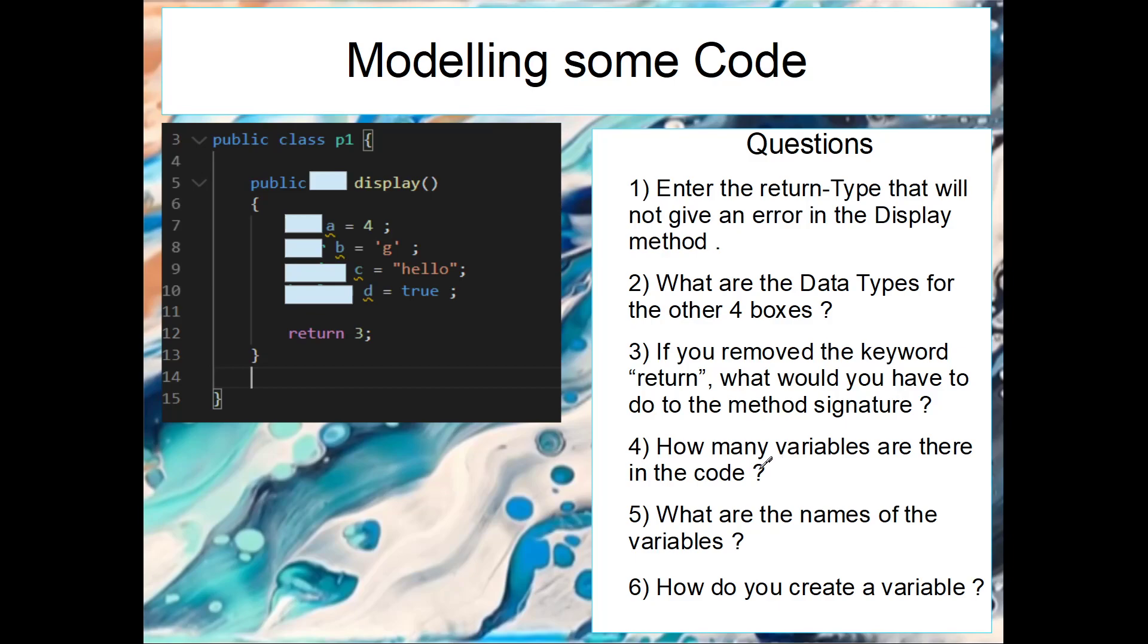How many variables are in the code? Well a variable is a data structure that we're attaching a single piece of data to. So we have one, two, three, four. So we have four variables.